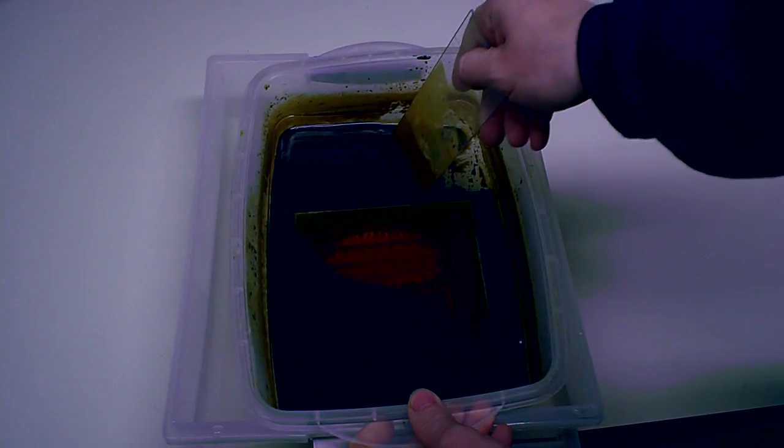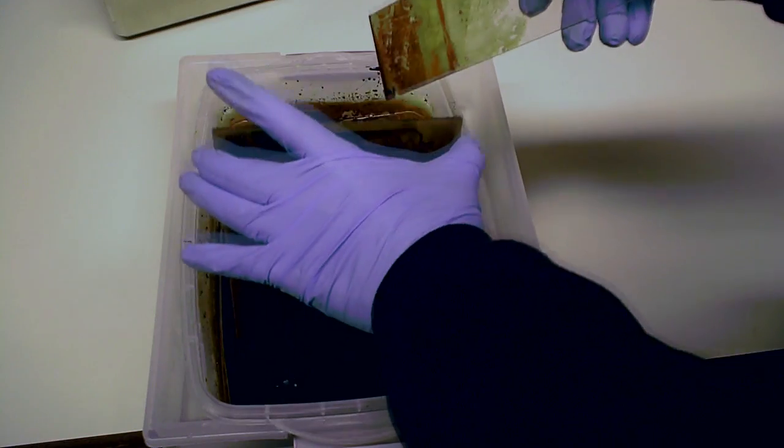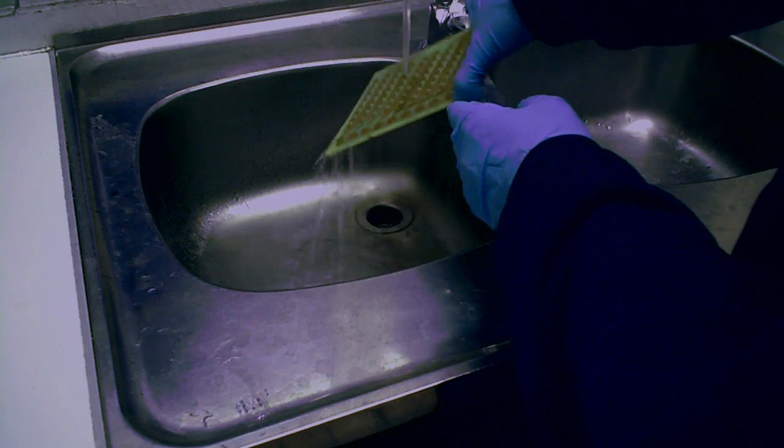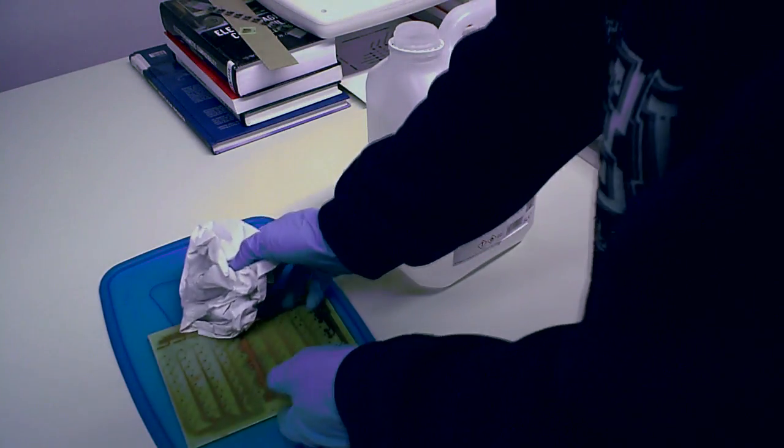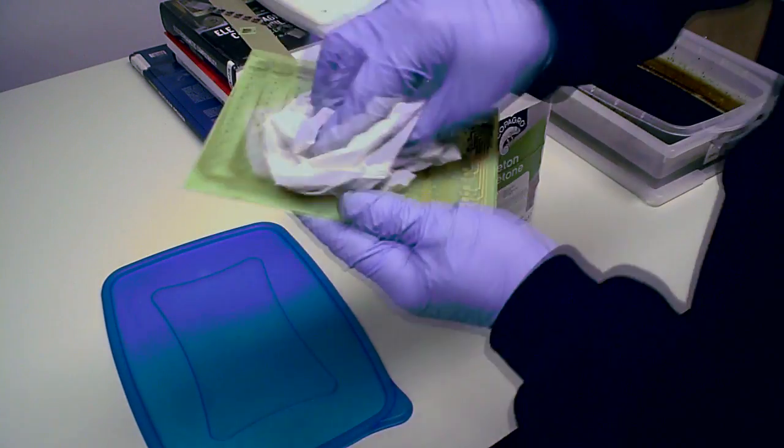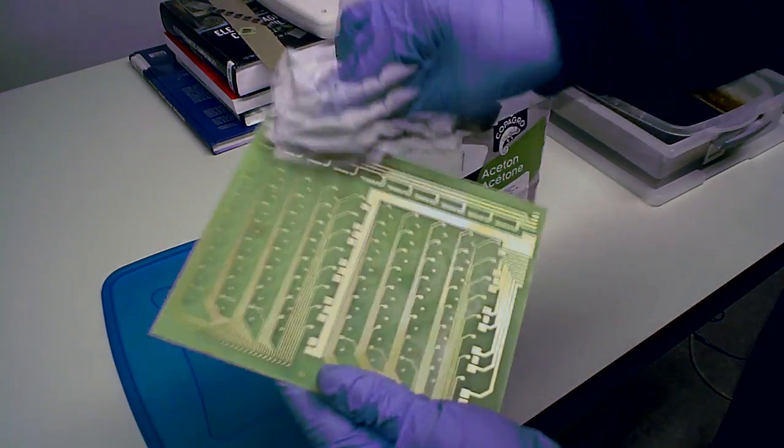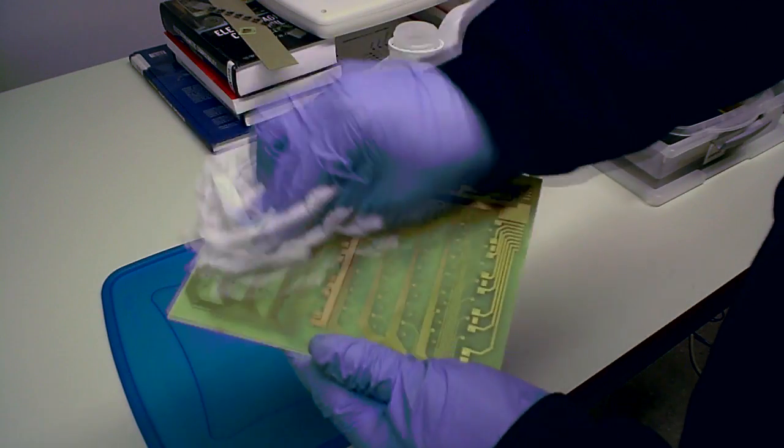Because ferric chloride is so corrosive, you should only use plastic or glass containers. Once the PCB is etched, give it a rinse under water, and clean it off with some acetone. This will remove the rest of the photosensitized layer on the PCB, so make sure you don't dip it in the etching solution, unless you want to remove all the copper on the PCB.